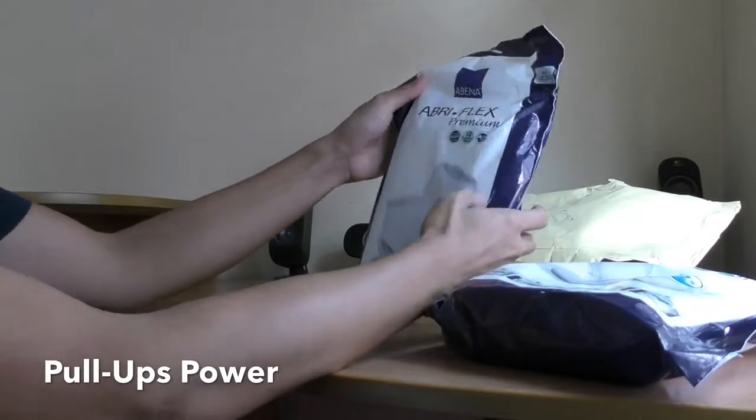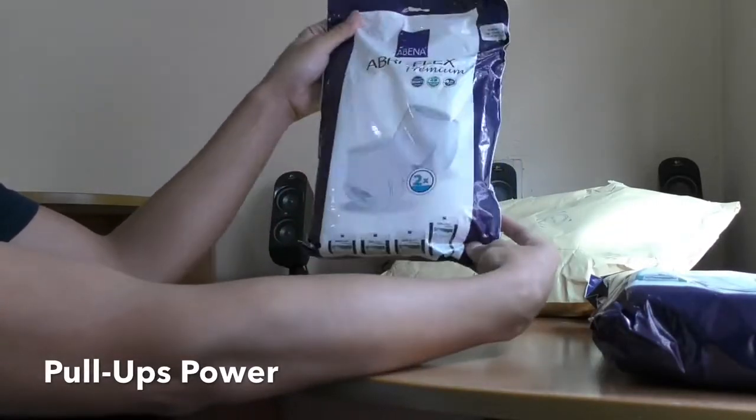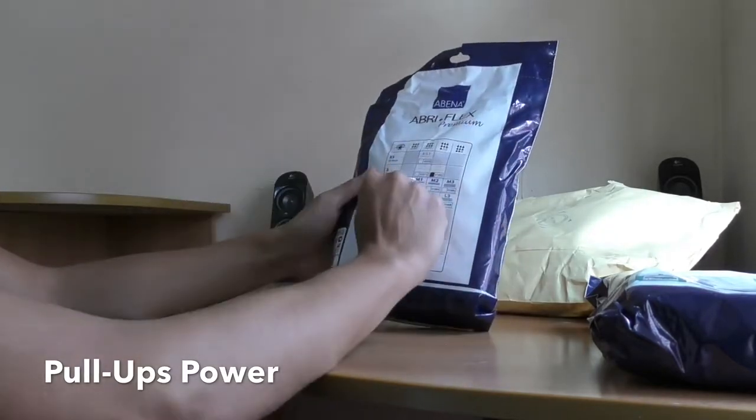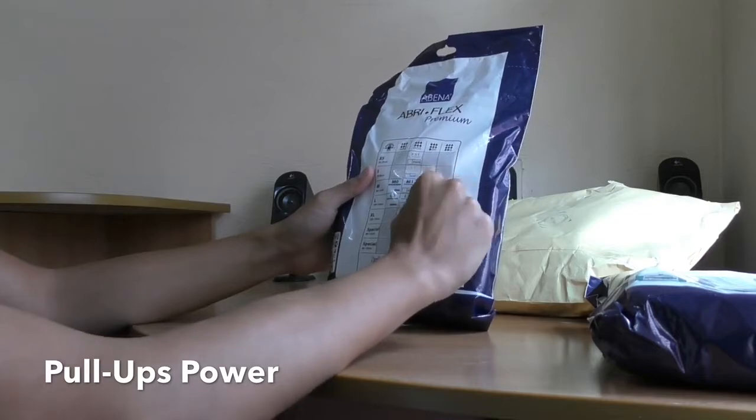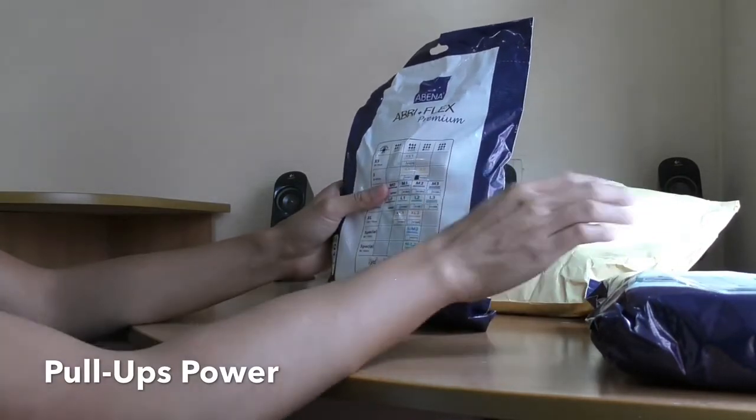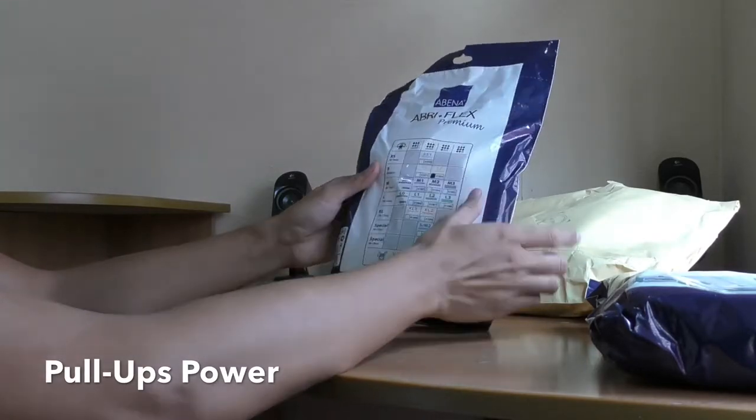This is a pull-up. This is AbriFlex Premium, small, same absorbency. And then a striper. This is for 60 to 90 cm.